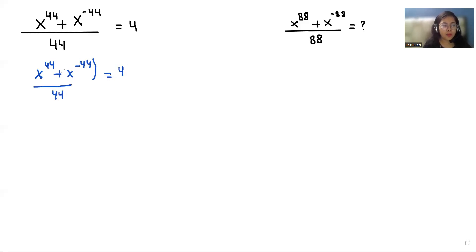Now I am going to multiply with 44 on both sides, and on the left hand side we eliminate this 44. So the value of x power 44 plus x power negative 44 equals 176.